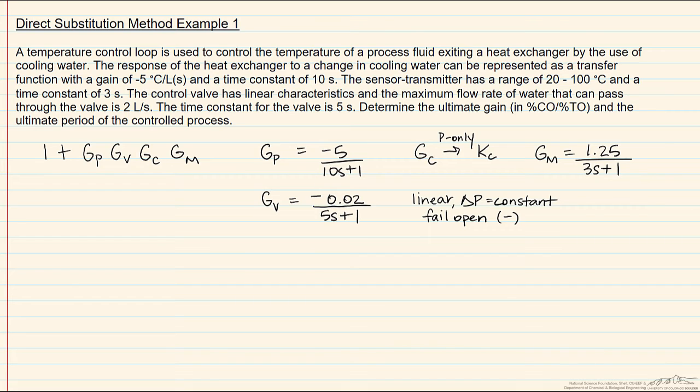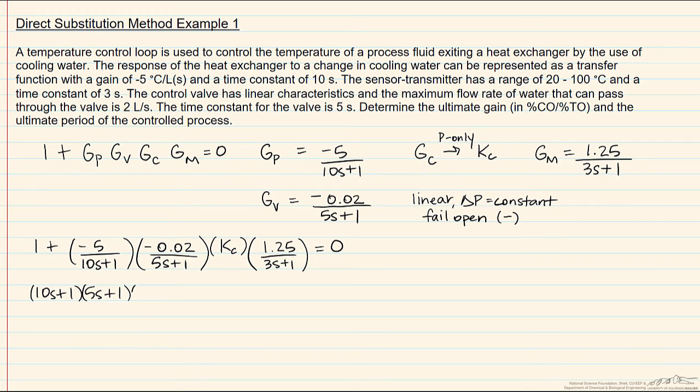With this information we can fill out the characteristic equation. We now find our least common denominator, which will be the three terms in the denominator of the second term: ten s plus one, five s plus one, times three s plus one. We multiply negative five by negative .02 by 1.25 by kc to get .125 kc.